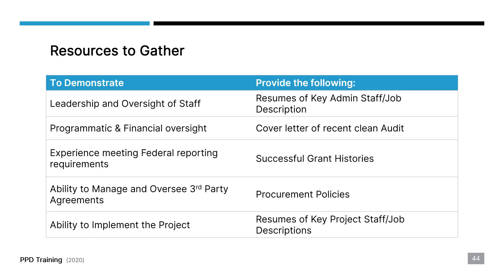To demonstrate the ability to manage and oversee third-party agreements, you can refer to your procurement policies of your organization. You don't have to include the entire policy, but you can pull out key parts that demonstrate that you have experience and plans and policies in place to ensure clean oversight of any consultants or partners. And to demonstrate the ability to implement the project, include the resumes of key project staff, or if you're hiring through the grant, include job descriptions that have been vetted through your organization.